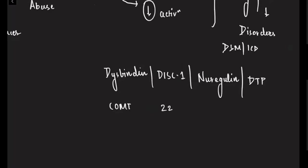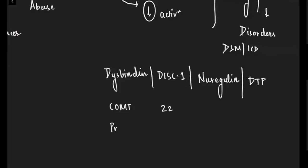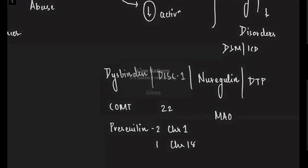That is why people with chromosome 22 abnormalities have higher chances of dementia and Down syndrome. For dementias, remember the chromosome number for presenilin: presenilin 2 is chromosome 1, and presenilin 1 is chromosome 14. You also need to remember MAO — these are the genes most commonly asked.